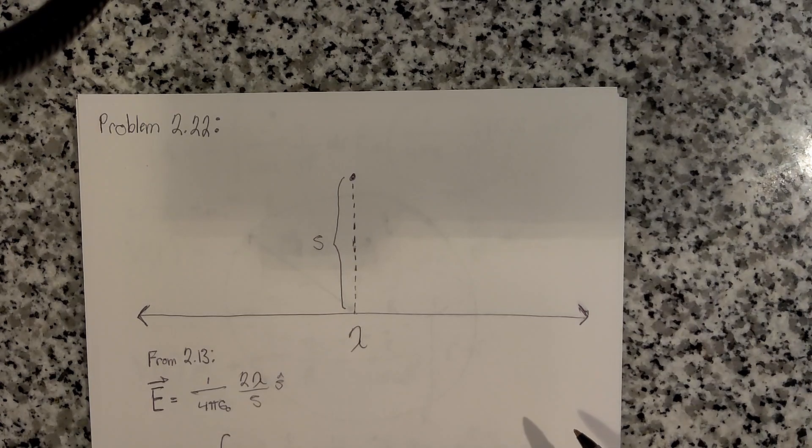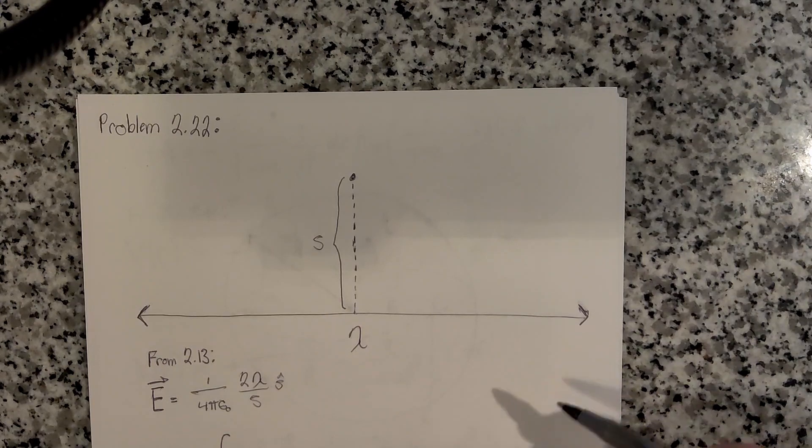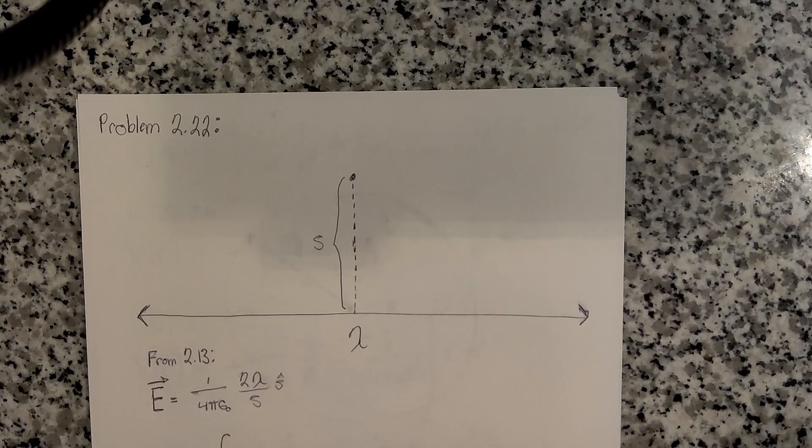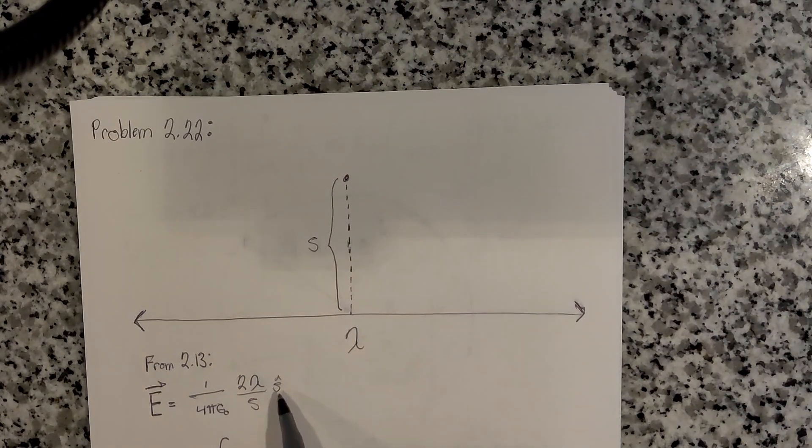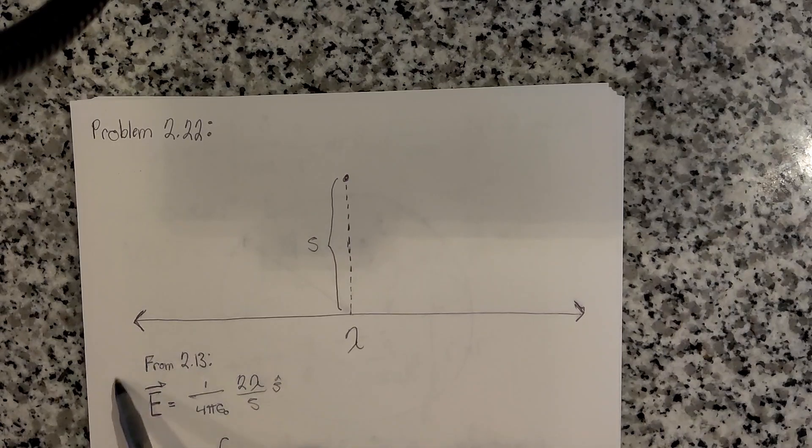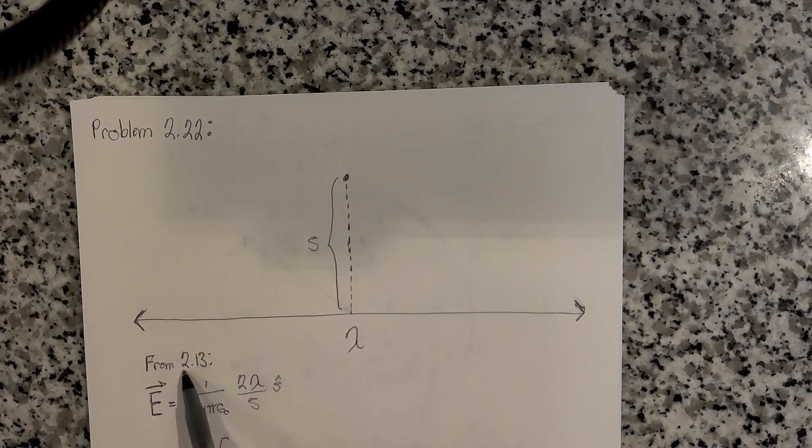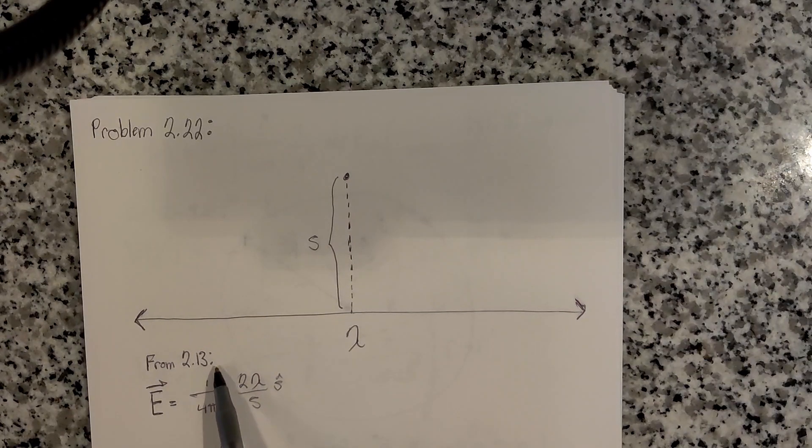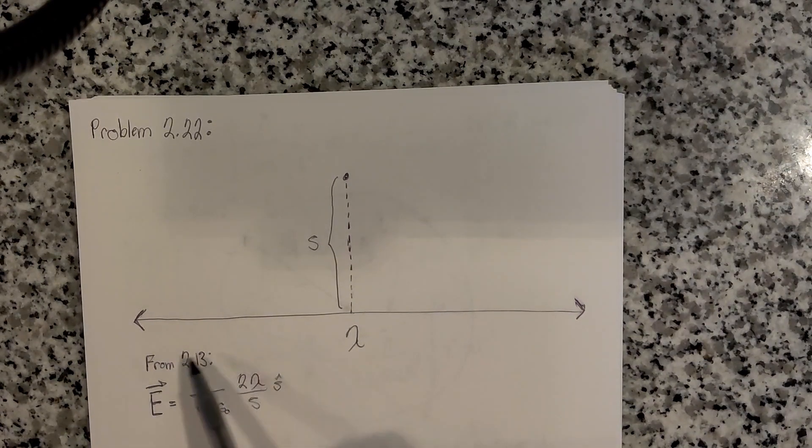Once we found the potential, we need to calculate the gradient to check that we've got the correct electric field. I've written down the electric field from this charge configuration from problem 2.13, which I've already solved. If you haven't watched that video, go back and watch it to see how we got this answer.